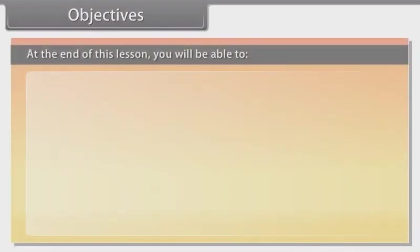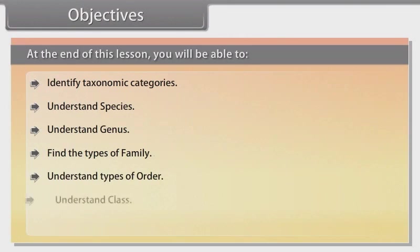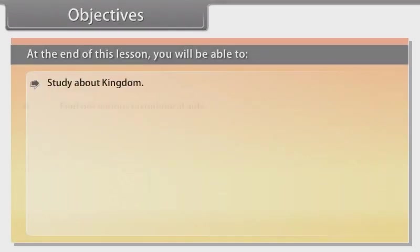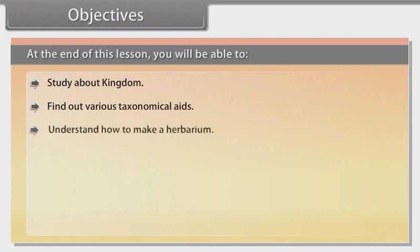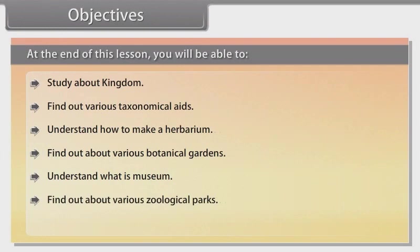At the end of this lesson you will be able to: identify taxonomy categories, understand species, understand genus, find the types of family, understand types of order, understand class, understand phylum, study about kingdom, find out various taxonomical aids, understand how to make a herbarium, find out about various botanical gardens, understand what a museum is, find out about various zoological parks, and understand what a key is.